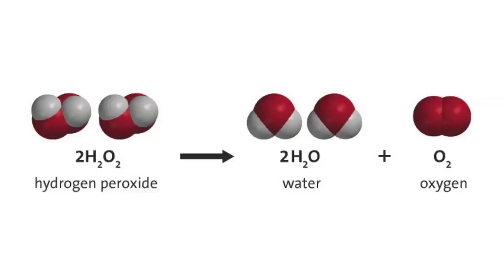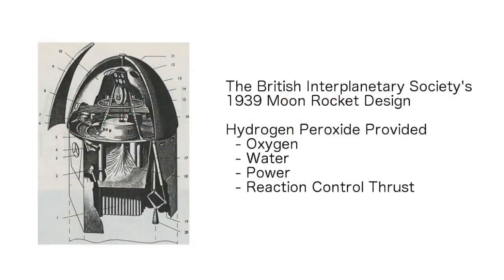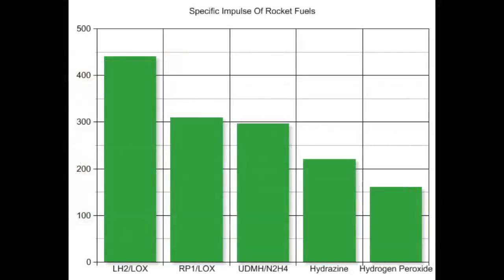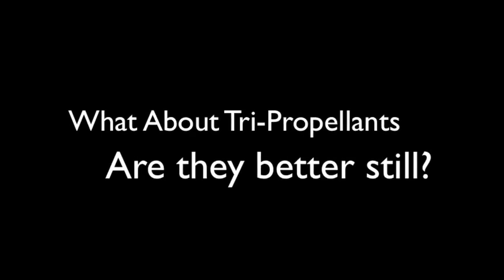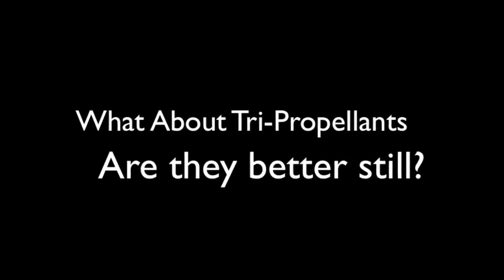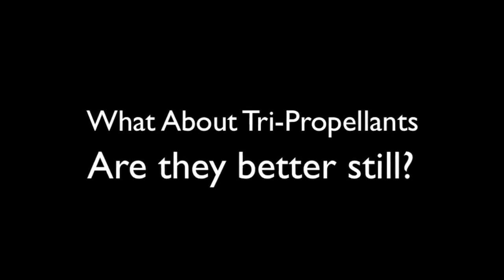Similarly, hydrogen peroxide breaks down into oxygen and water, and some space mission designers use this as a common supply for oxygen, water, and life support — though these advantages have to be weighed against the fact that it has an even lower specific impulse than hydrazine. So those are monopropellants — very simple. They are less efficient than bi-propellants, which might lead some to ask: can we do better with a tri-propellant, mixing three fuel types together?